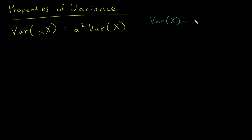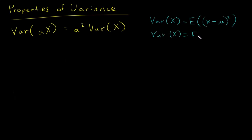So the variance of random variable x equals the expected value of x minus the mean of x — sometimes written as mu — squared. It's the average squared distance from the mean. By definition, that's what variance of x is. I also like to write this as the expected value of x minus the expected value of x, squared. The reason I like to write it like this is because that's what mu is — mu is the expected value of x, it's the average x value.